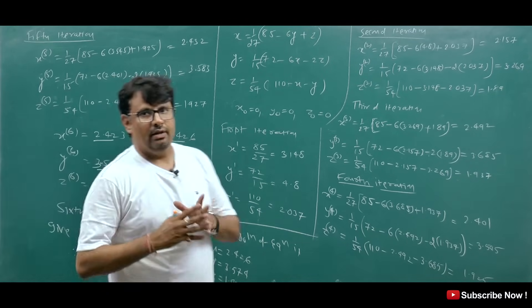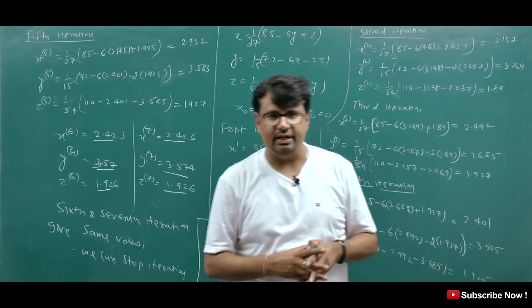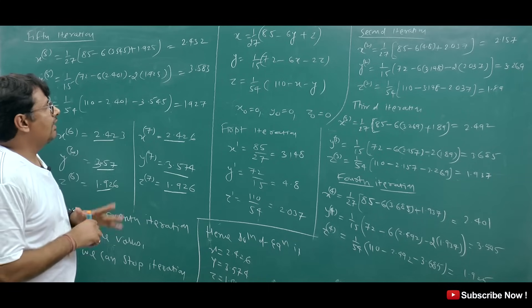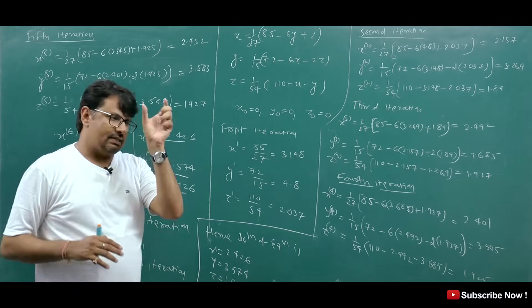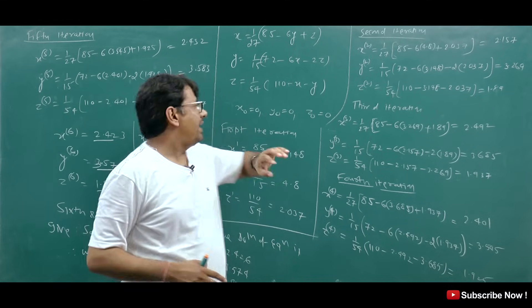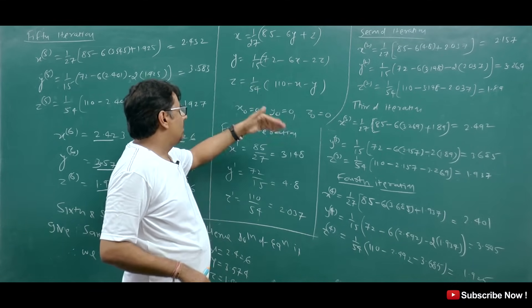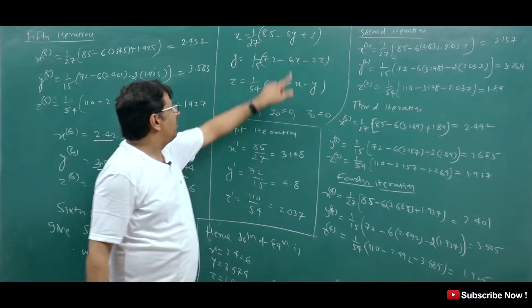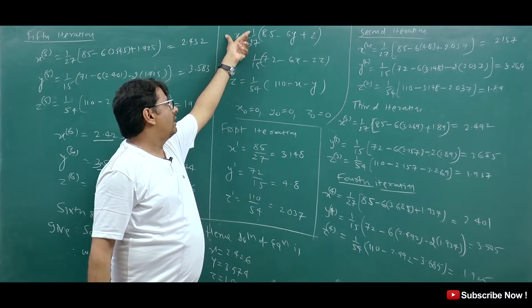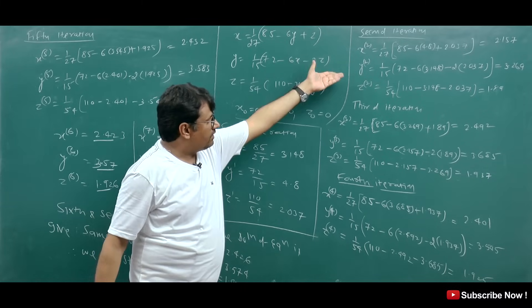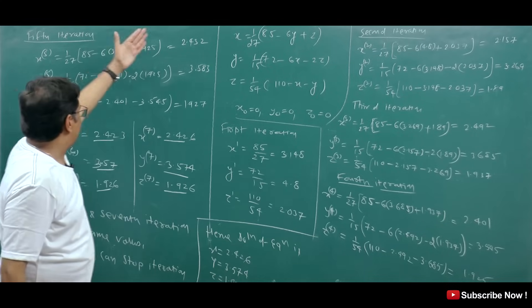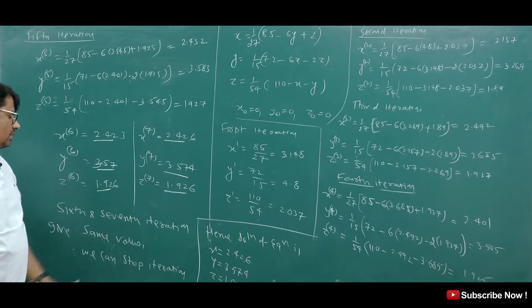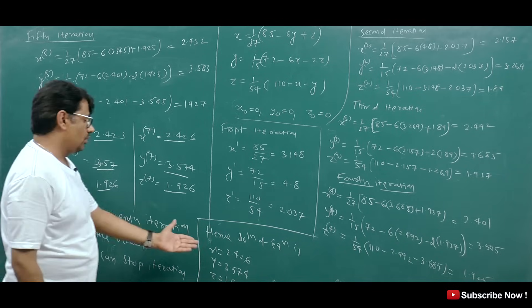Let me explain the whole method once again. In the Jacobi method, for the given equations, check the coefficients — in each equation, the diagonal coefficient must be greater than the sum of the others. Then take initial values as 0, 0, 0 and perform the first iteration. Use those values to get the second iteration, then third, then fourth, fifth, sixth, seventh — until the values repeat. When the 6th and 7th iterations give almost the same values, we stop and that is our answer.